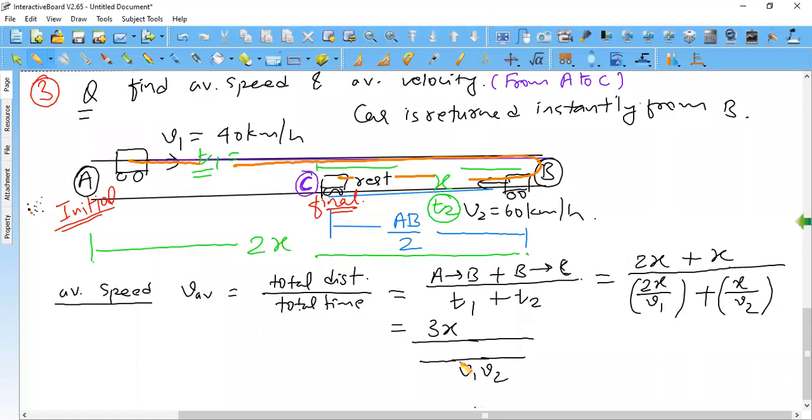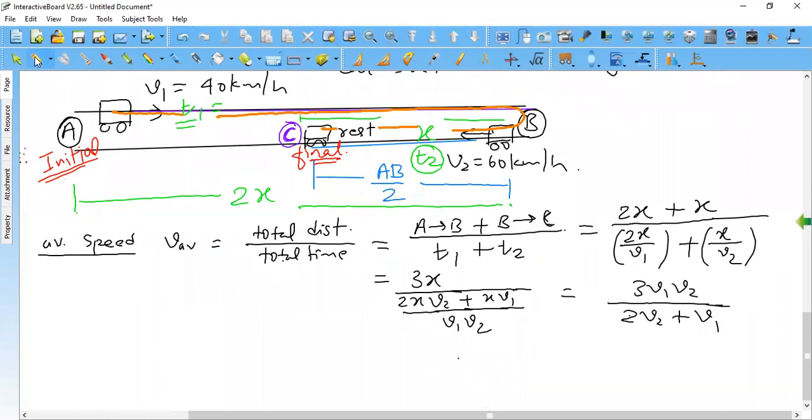3X. Now we have to solve this, so 2x will become V2, and x into V1. X will cancel from common, so 3 V1 V2 divided by 2 times V2 upon, oh sorry, plus V1. This is a formula. Now value put here. So 3 into V1, 60 into 40 divided by 2 into 60 plus 40. So this is 3 into 60 into 40, this calculation is very easy. 120 plus 40, 160.